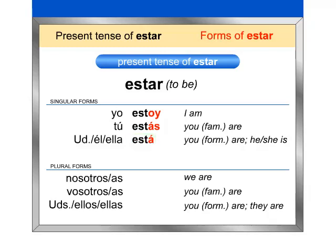Muy bien. Now repeat after me the plural forms. Nosotros, nosotras — estamos. Vosotros, vosotras — estáis. Ustedes, ellos, ellas — están.